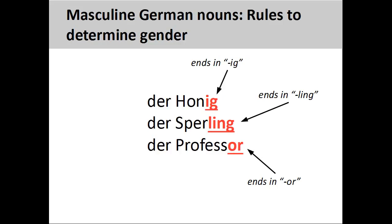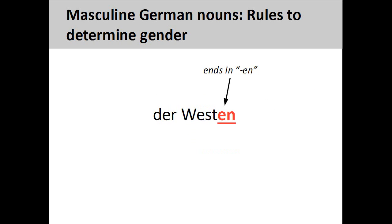Nouns ending in '-ig,' '-ling,' and '-or,' such as 'Honig' (honey), 'Sperling' (sparrow), and 'Professor' (professor), are masculine. Finally, most nouns ending in '-en,' such as 'Westen' (the west), are masculine.